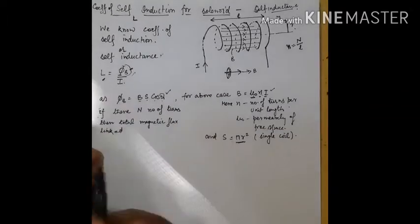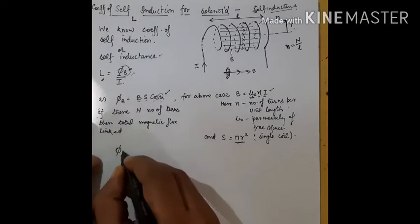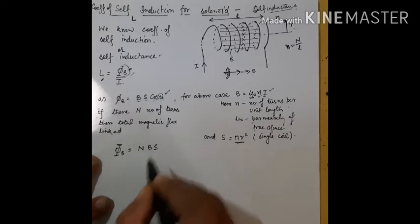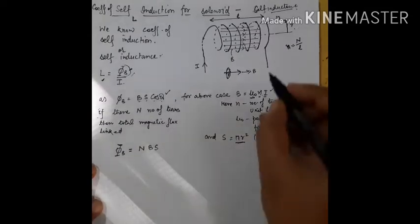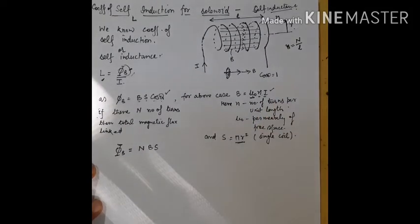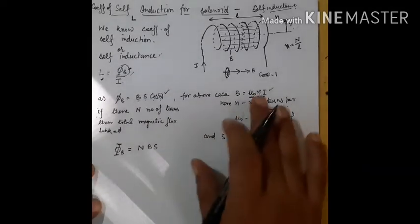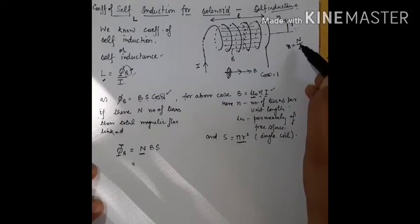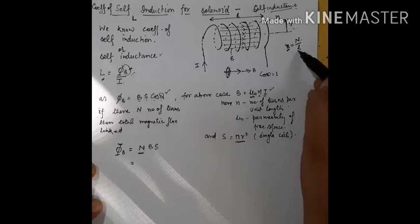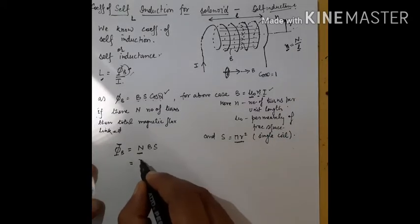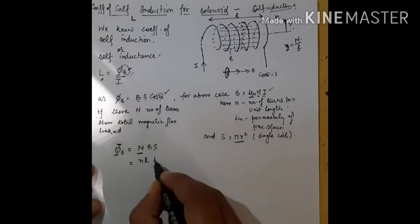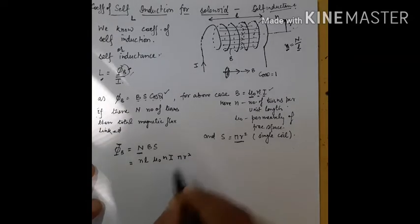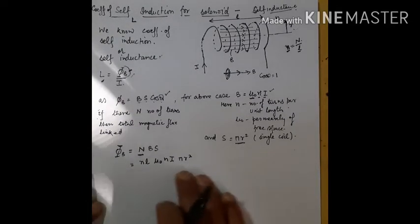If the solenoid has capital N number of turns, the total flux will be equal to N·B·S. As discussed, cos(0°) is 1. The total number of turns is equal to small n multiplied by small L. Substituting the values, we get n·L for the number of turns, μ₀·n·i for the magnetic field, and π·r² for the surface area.